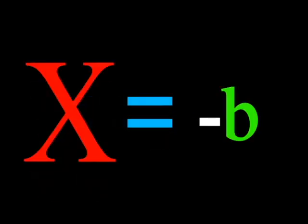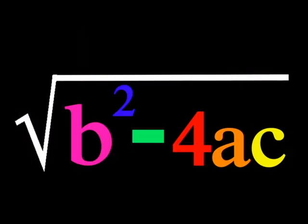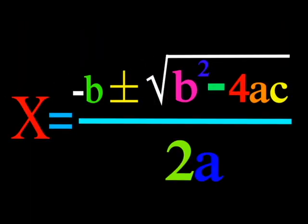x equals negative b, plus or minus the square root of b squared minus 4ac, all over 2a.